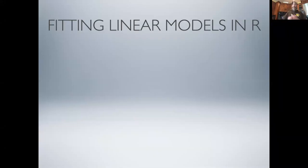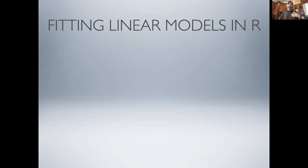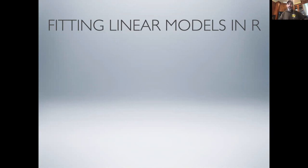Welcome back. In the last video we talked about linear models — both linear regressions where the X variable is continuous, and implicitly in one-way ANOVAs where the X variable is categorical but there's only one categorical variable being considered. Both of those are cases of univariate linear models and the assumptions we went over.